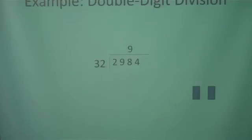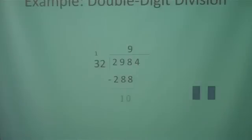Now we're going to multiply by the 1s place. 9 times 2 is 18 — put down your 8 and carry your 1. 9 times 3 is 27, plus your carry of 1 is 28. Now we're going to subtract, and we get 10. Since 10 is less than 32, we know that 9 was a good guess, a good estimate.